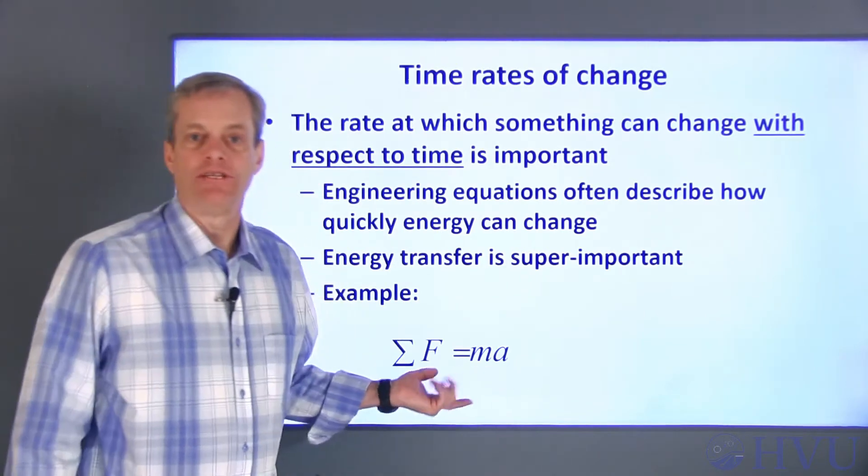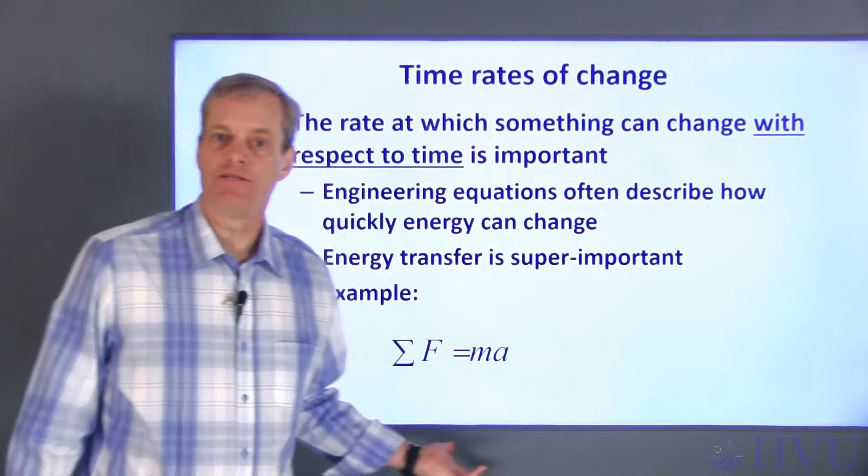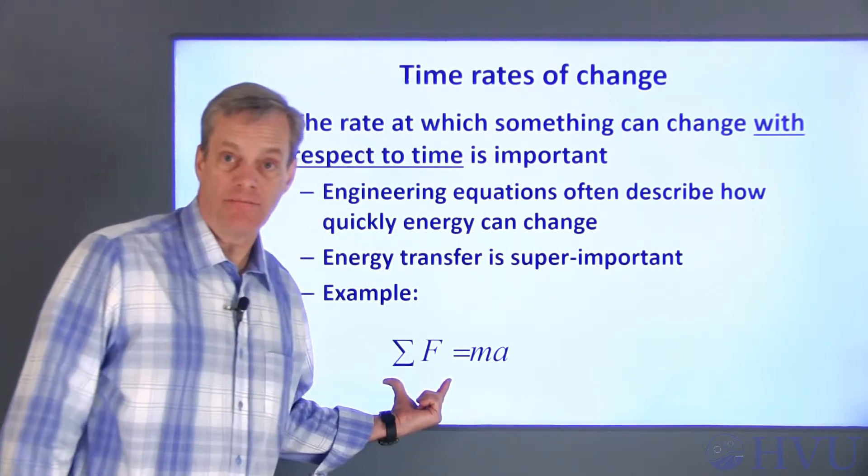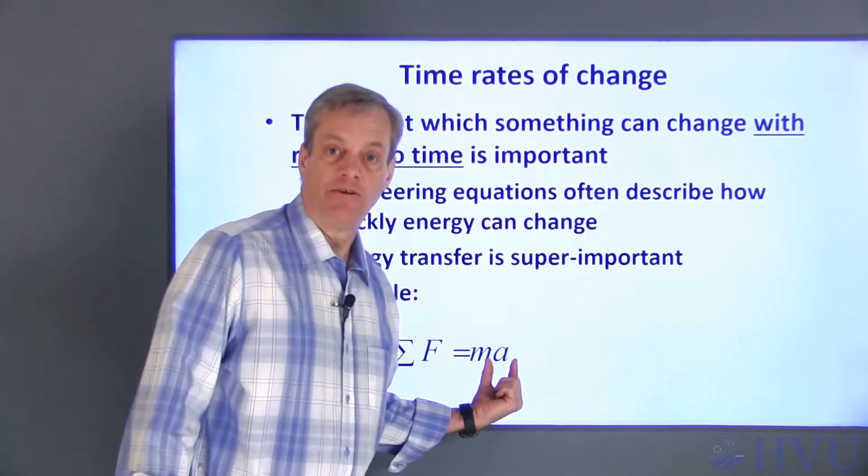Newton's Second Law, for example, governs the rate at which a body will accelerate when a force is applied to it. The equation is typically written as the sum of forces applied to the body equals the body's mass, m, times the body acceleration, a.